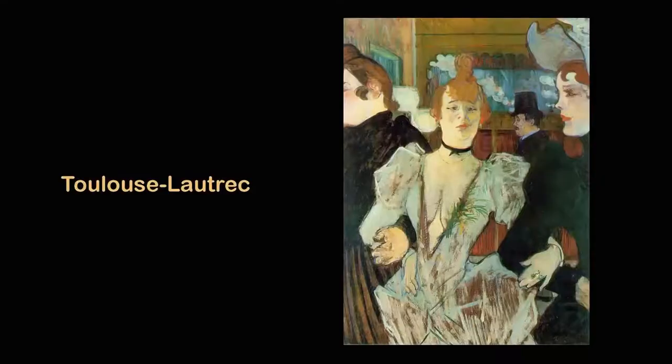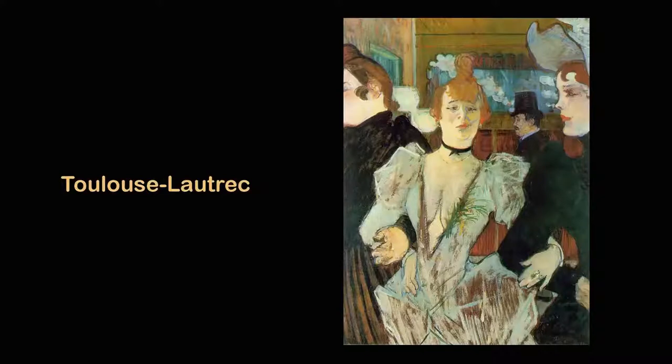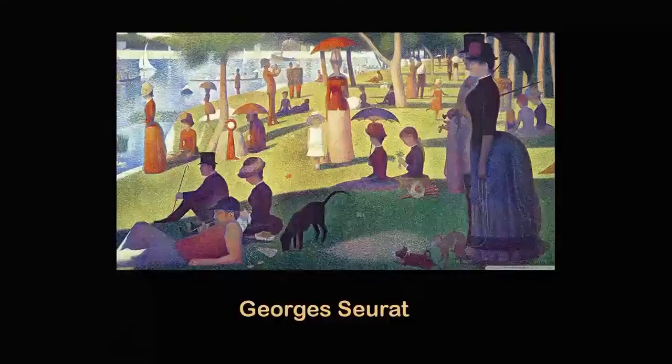In the Post-Impressionist period we also have this very interesting artist — Toulouse-Lautrec — whose subject matters are mostly about people he used to observe in opera houses, bars, and brothels. The way he painted his subjects and the way he empathised with them, through a very sketchy drawing-based kind of idiom, is amazing, because the very notion of oil painting was being transformed at that point of time.